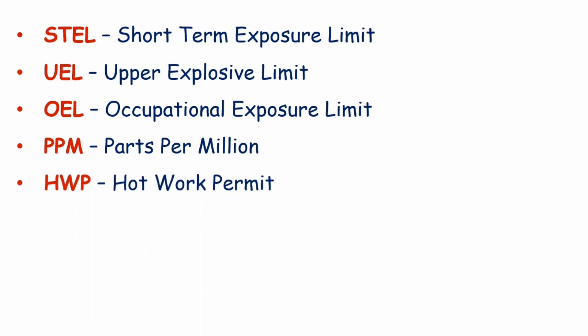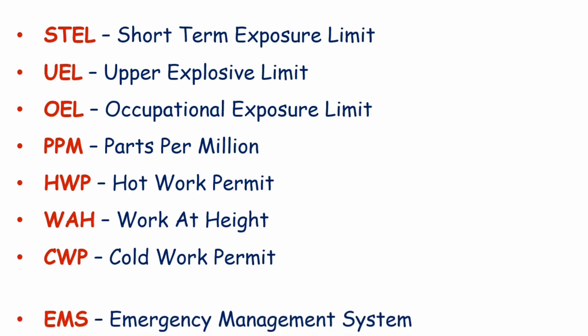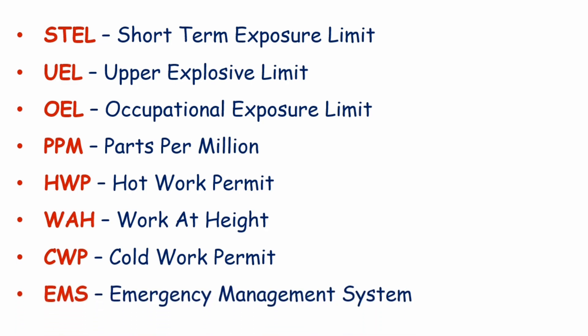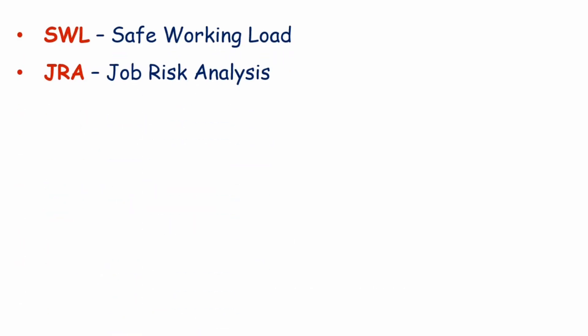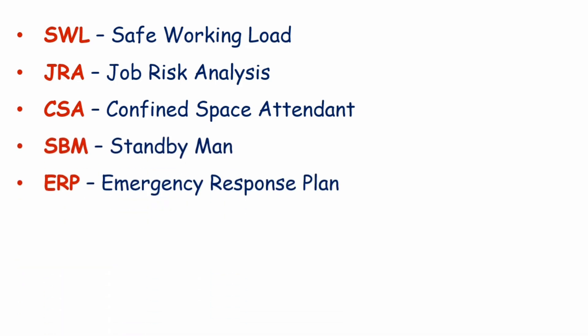SWP — Hot Work Permit. WAH — Work at Height. CWP — Cold Work Permit. EMS — Emergency Management System. SWL — Safe Working Load. JRA — Job Risk Analysis. CSA — Confined Space Attendant. SBM — Standby Man. ERP — Emergency Response Plan.